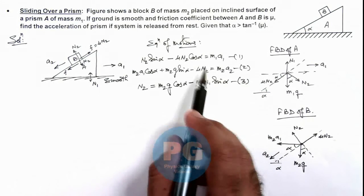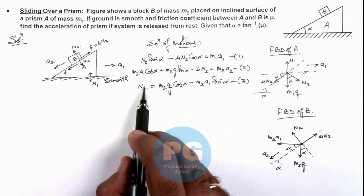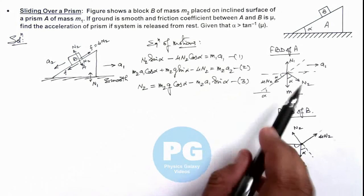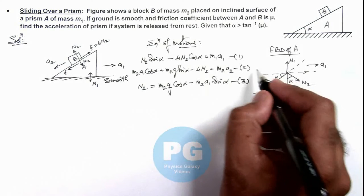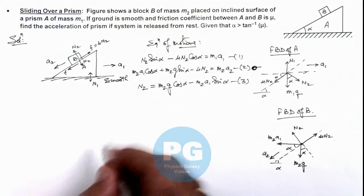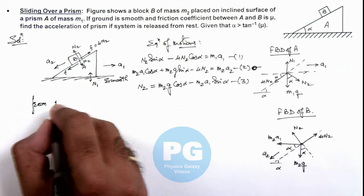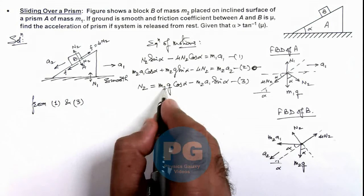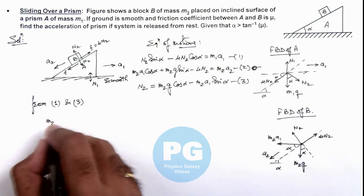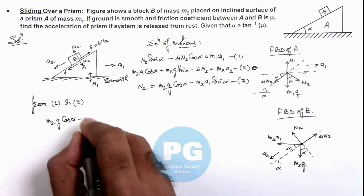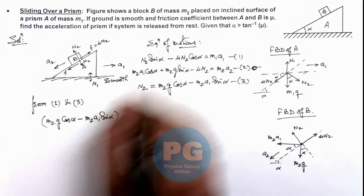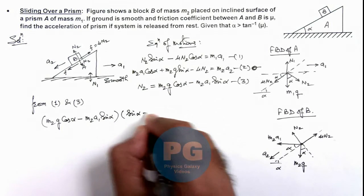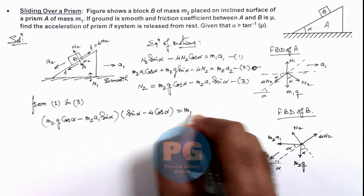From Equations 1 and 3, we eliminate N2 to get the acceleration of the prism, since the acceleration of block B is not required and Equation 2 is not needed. Substituting the value of N2 from Equation 3 into Equation 1, taking N2 common: (m2·g·cos(α) − m2·a1·sin(α)) × (sin(α) − μ·cos(α)) = m1·a1.